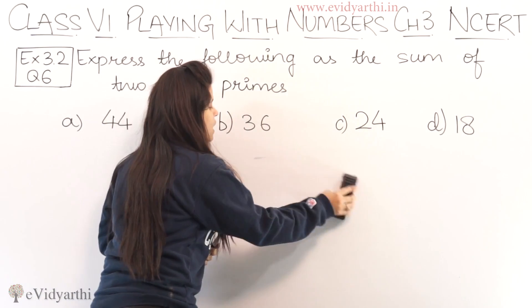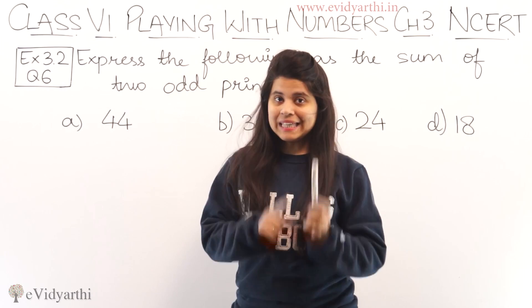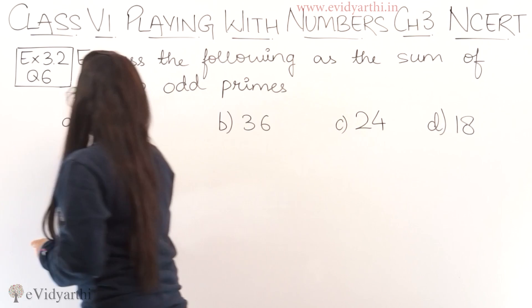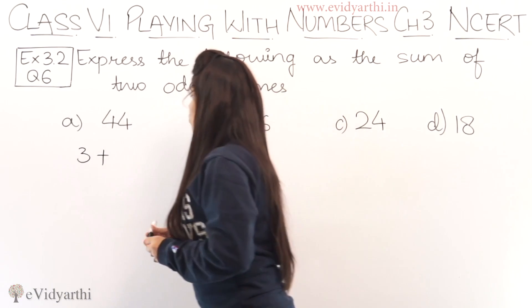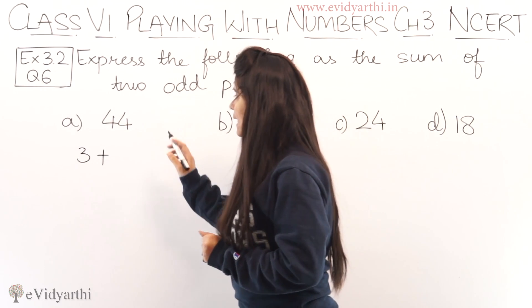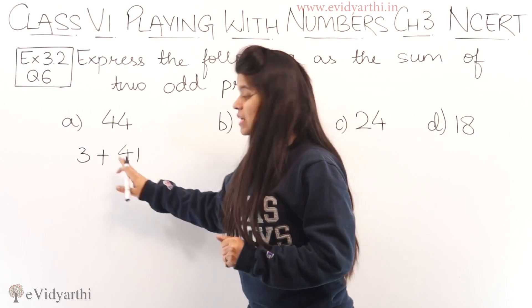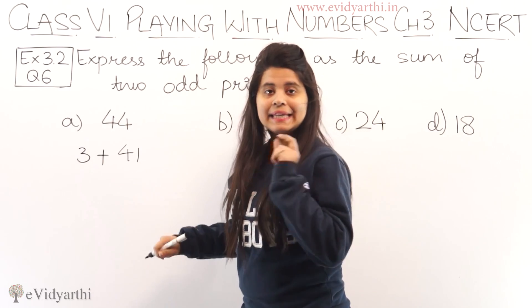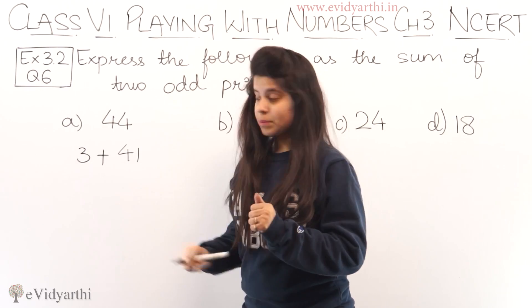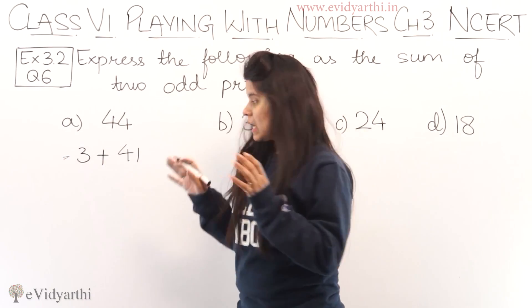Now, the first number is 44. Yahan pe bola hai odd prime ka sum. Sabse pehla prime number hota hai 2, lekin wo even number hai, to wo hum nahi le sakte. So if I start with 3 — 3 plus what will be 44? 44 mein se 3 minus karenge, so milega 41. Ab humein check karna padega ki 3 ke saath jo number laya hai wo odd prime hai ya nahi. 41 is a prime number and also an odd number, so this means 44 ko hum likh sakte hain as 3 plus 41.